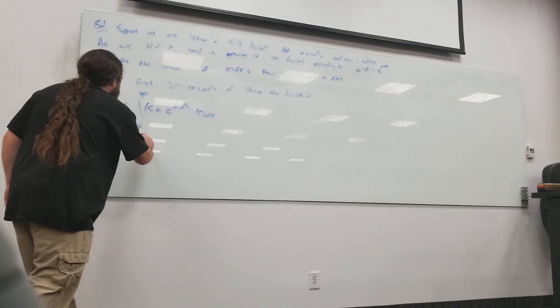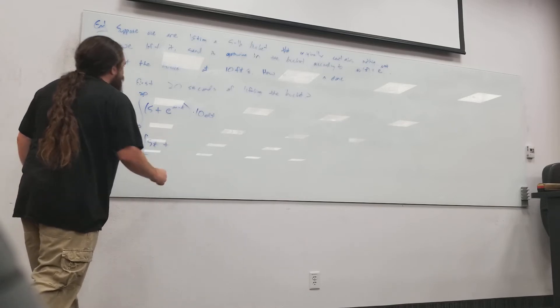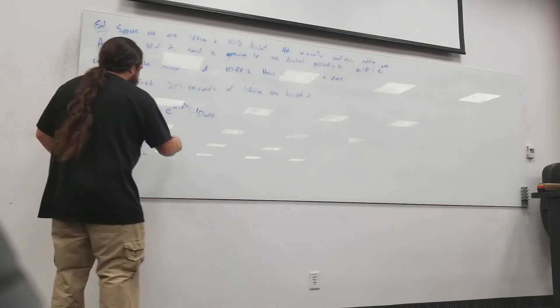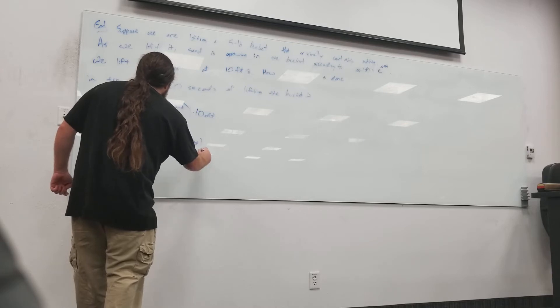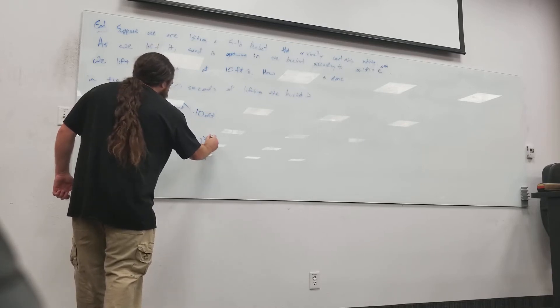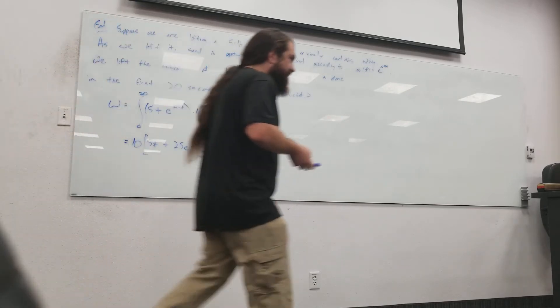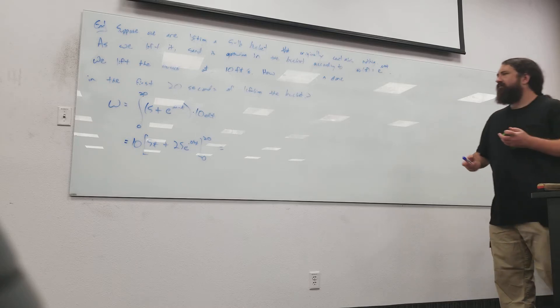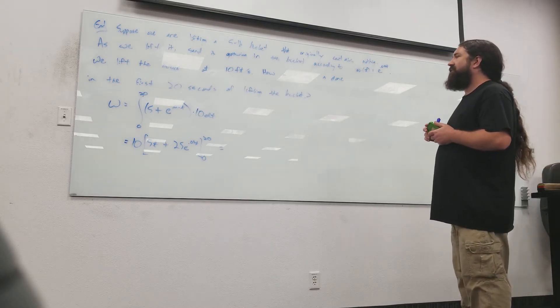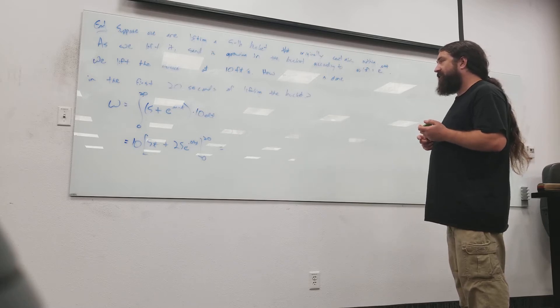This is 10 times, if I integrate this, I got 5t plus 1 over 0.04. It's 25, is that right? 25e to the 0.04t. It must be evaluated at 0 and 20. Let's see what this is. Why are we integrating with 5? Because the weight of the bucket can be in the same place. It is.